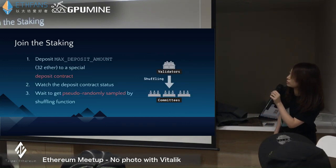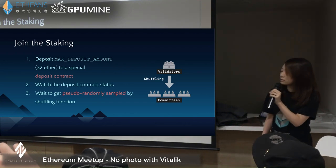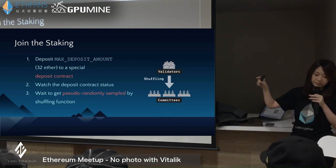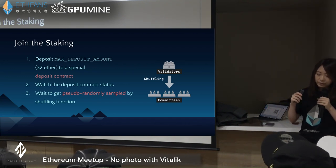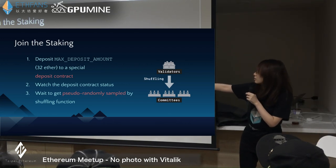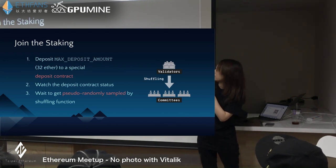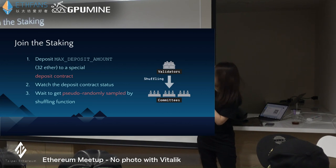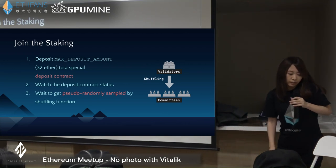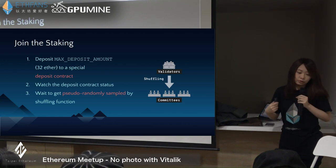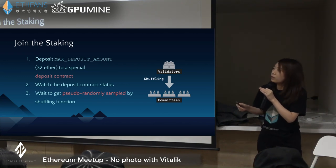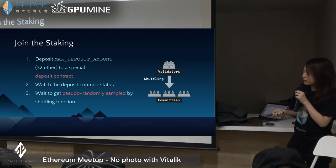Let's talk about the shuffling. Once a validator is added into the large validator list and gets activated, they will be shuffled into several small committees. The whole system will have only one big validator list, and they will be randomly sampled into two different committees. Each committee is assigned to be responsible for verifying one certain shard structure — specifically, one certain block or slot in the spec.